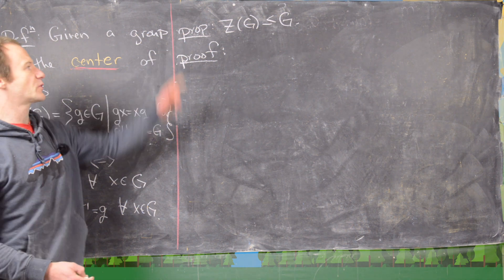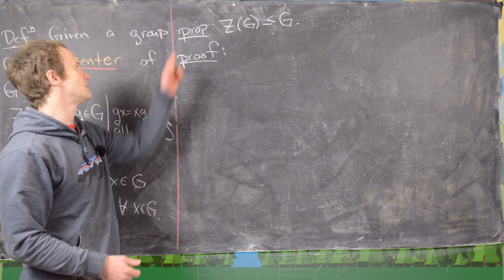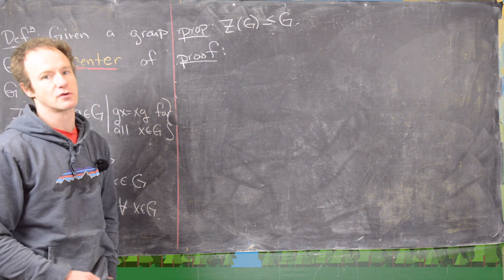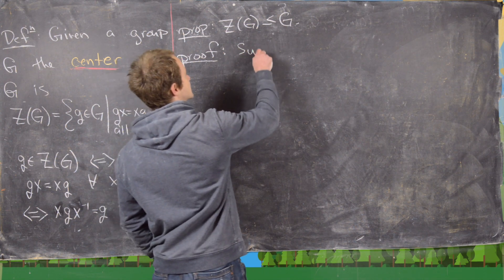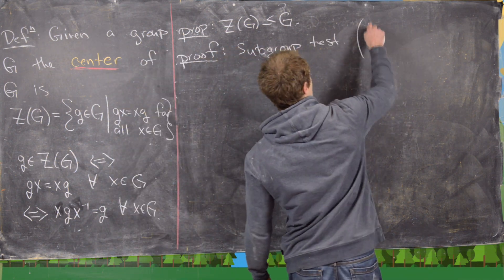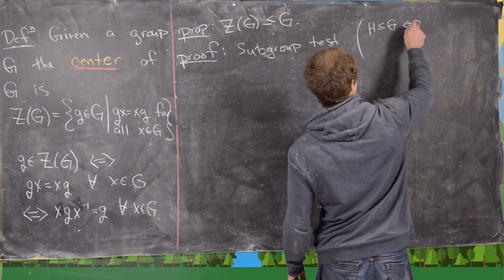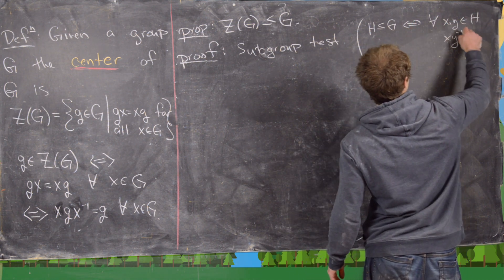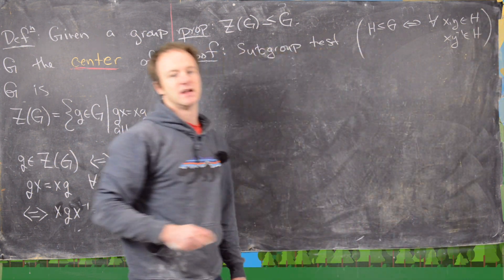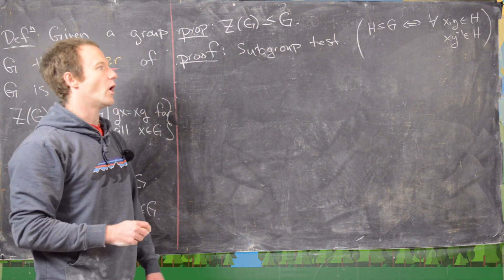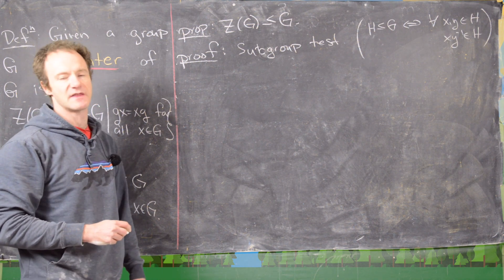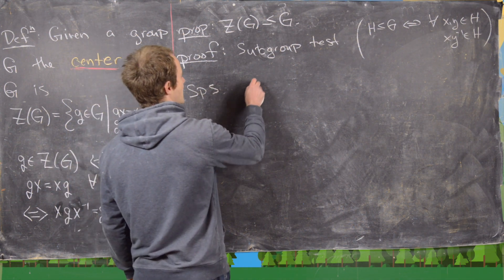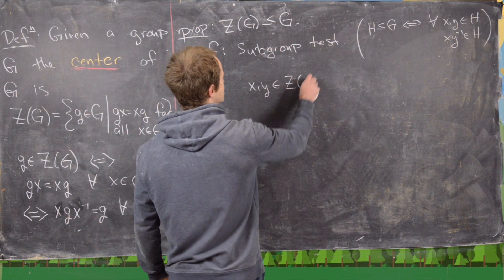So now we want to prove the following proposition before we do an example. That proposition is that the center of G is in fact a subgroup of G. We're going to use the subgroup test. That says that H is a subgroup of G if and only if for all x and y in H, xy inverse is also in H. So you only have to check one thing to show something's a subgroup instead of three things by the definition of the subgroup.